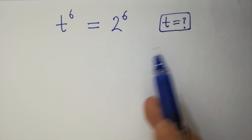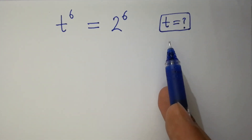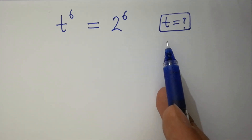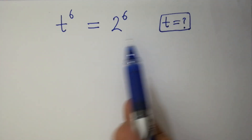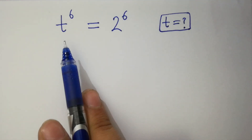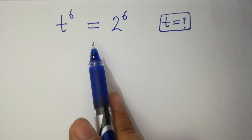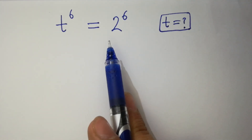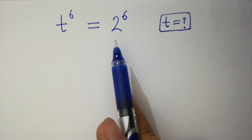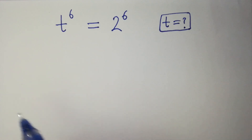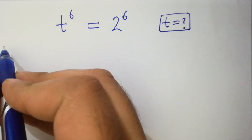Hello friends. Find the value of t if t to the power 6 equals 2 to the power 6. Let's have a solution.